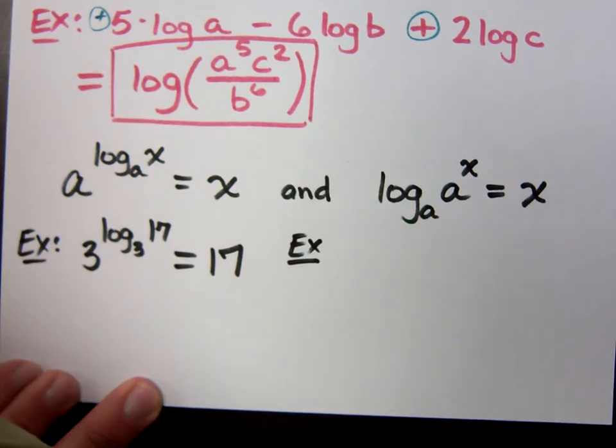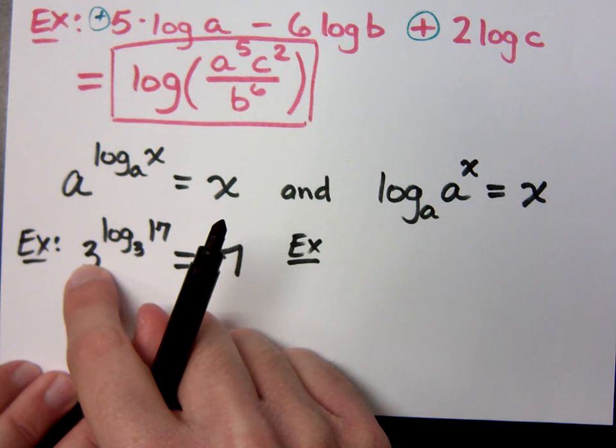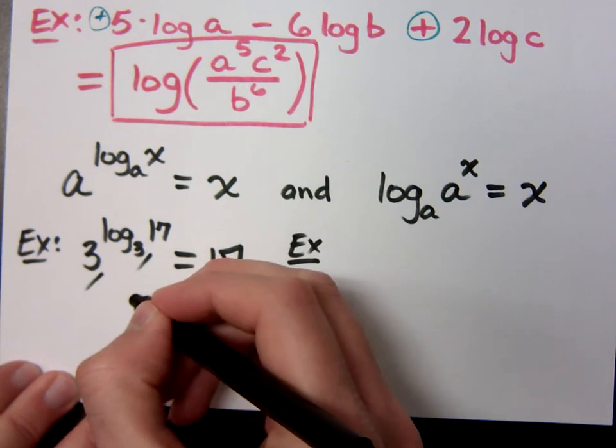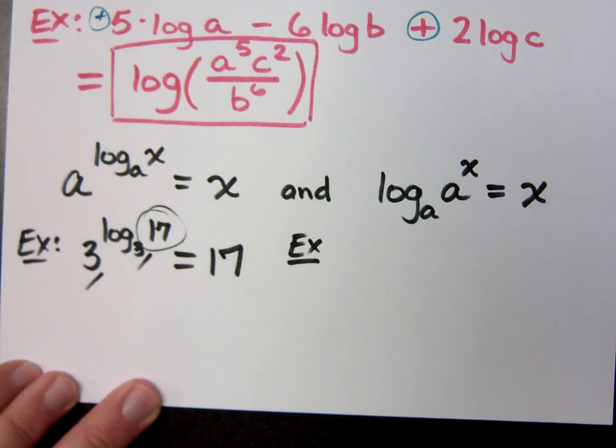Exponential and logs are inverses of each other, right? So if I have a log in an exponent and the bases are the same, I'm going to be left with whatever's inside here. And it may be easier to see if I write it this way.